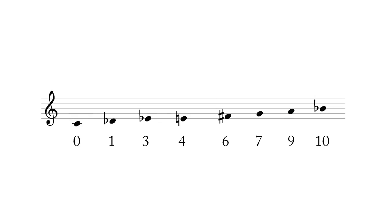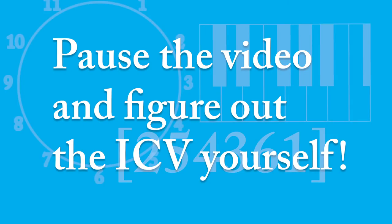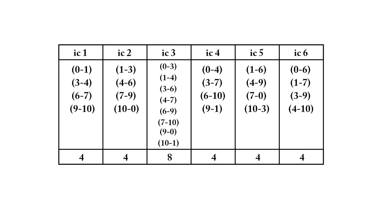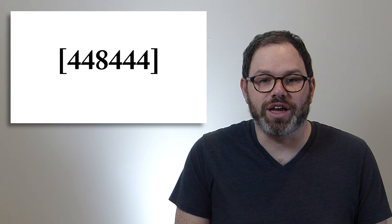Let's look at another example, the octatonic scale. The octatonic scale's interval class vector looks different from both of the previous scales. Here we see a particular focus on minor thirds and tritones, and perhaps more importantly, an almost completely even distribution of interval classes across the entire collection. This is distinct from both the diatonic and whole-tone collections.